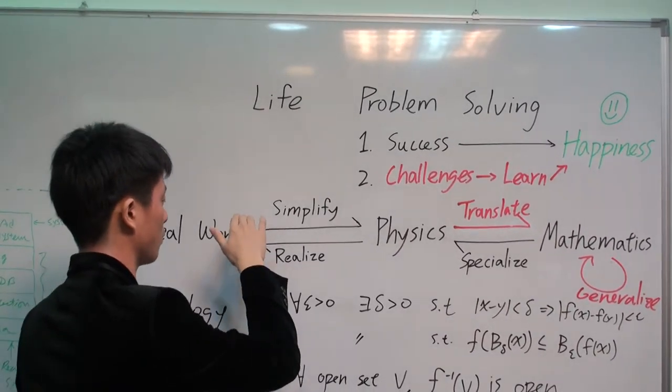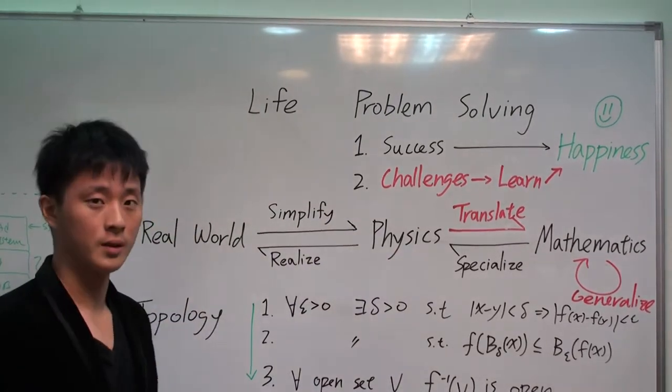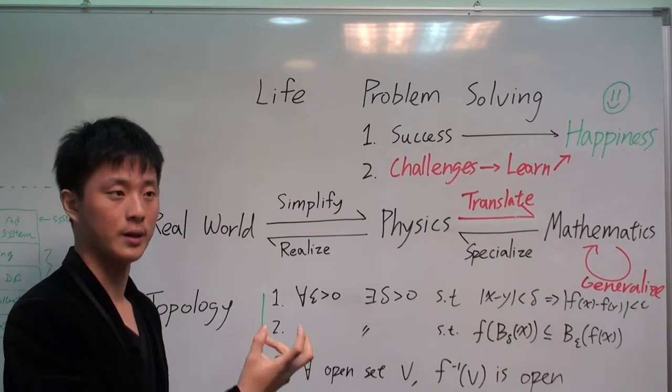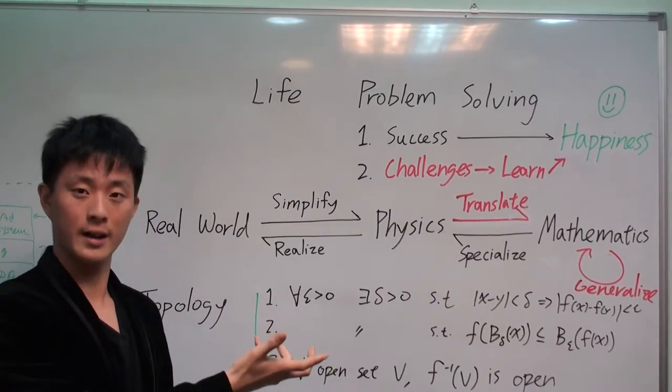So, we simplify it into physics, into, maybe approximate it into elliptical shape. So, it's more generalized. But still, physics is not flexible enough.